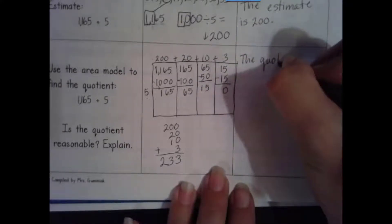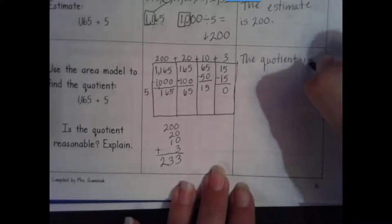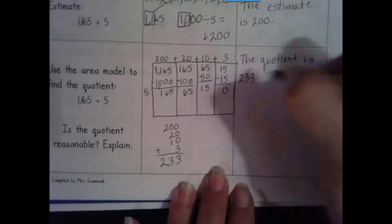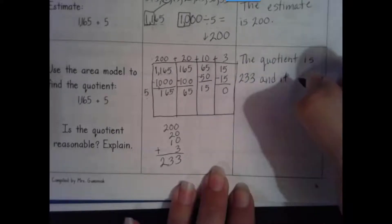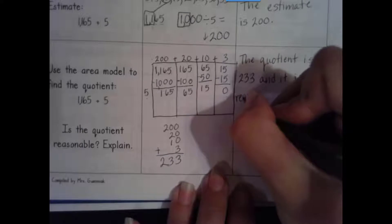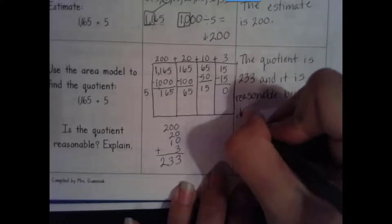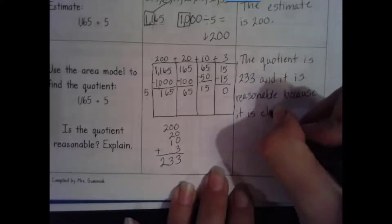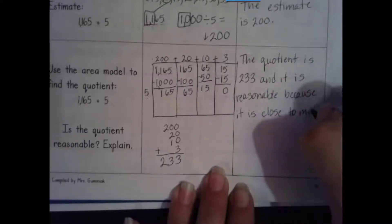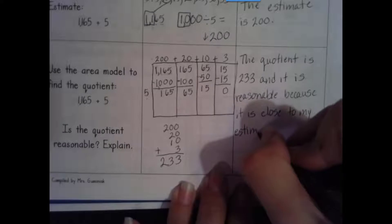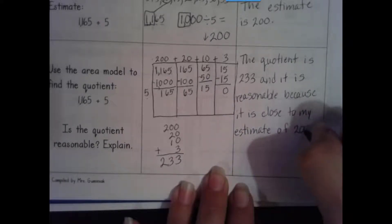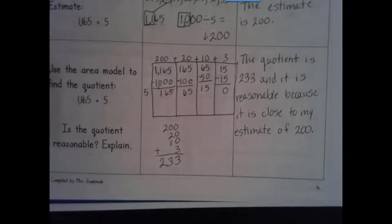The quotient is 233 and it is reasonable because it is close to my estimate of 200. Now let's do some more practice of dividing using the area model. Thank you for joining me.